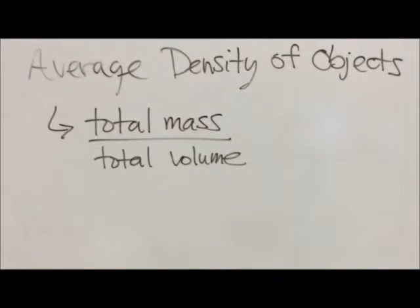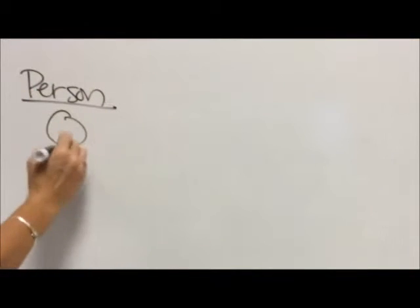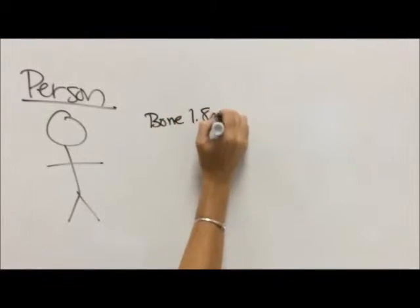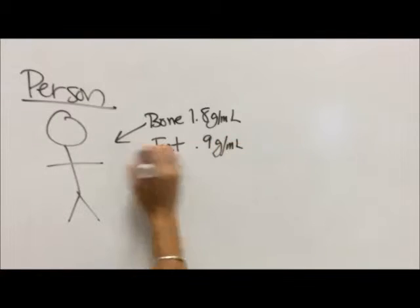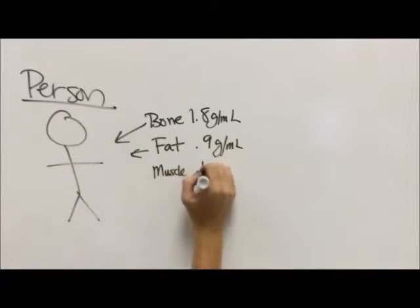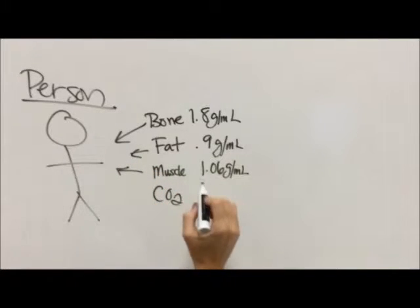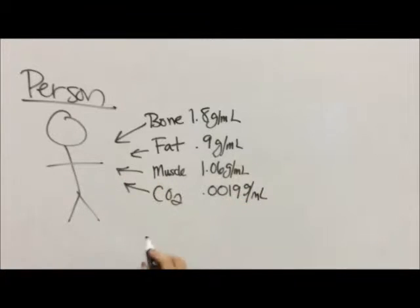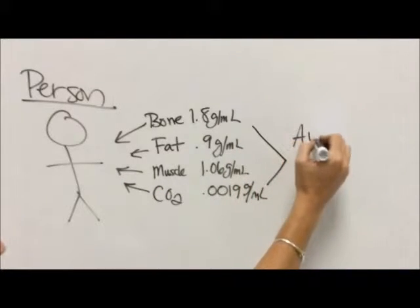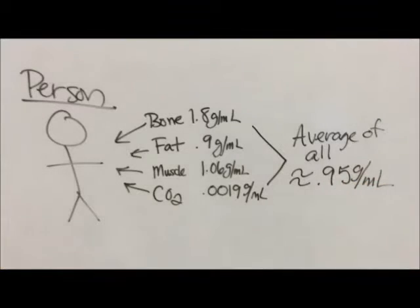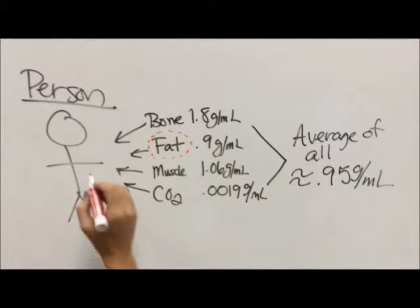So the average density of an object, now we're not talking about a specific substance, is going to be our total mass divided by our total volume. So a person isn't one substance. And a lot of people will say when they go swimming, oh, I always sink to the bottom and I always float and blah, blah, blah. But if we break a person apart into some of our major components, bone 1.8, fat 0.9, muscle is about 1.06, and the carbon dioxide that fills a lot of our lungs is going to be 0.0019. That gives us, if we look at our total mass and our total volume, we'll get our average density of a person, usually somewhere in the neighborhood of 0.95 grams per milliliter.